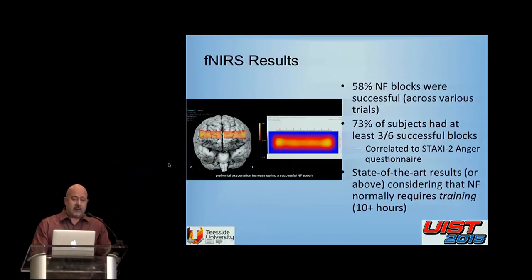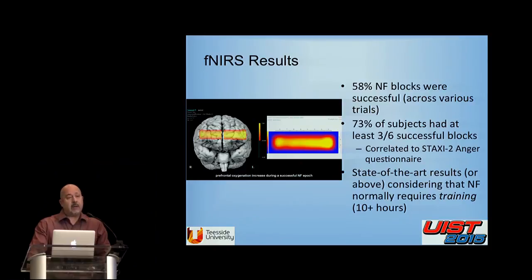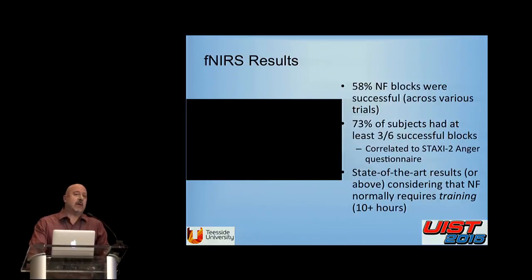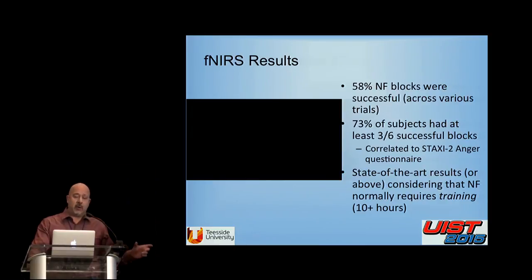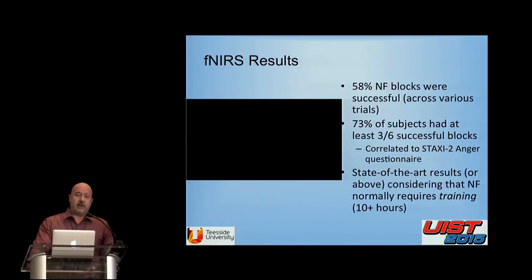If you plot results through the system itself, during a neurofeedback epoch you see the left part of the PFC flaring. For our set of 11 subjects, results are pretty good considering the state of the art in neurofeedback. We define success as a subject being successful on at least half of six neurofeedback epochs — a standard BCI criterion. Using that criterion, 73% of subjects were successful, and looking across individual neurofeedback blocks, 58% are successful. That is at or above the state of the art.